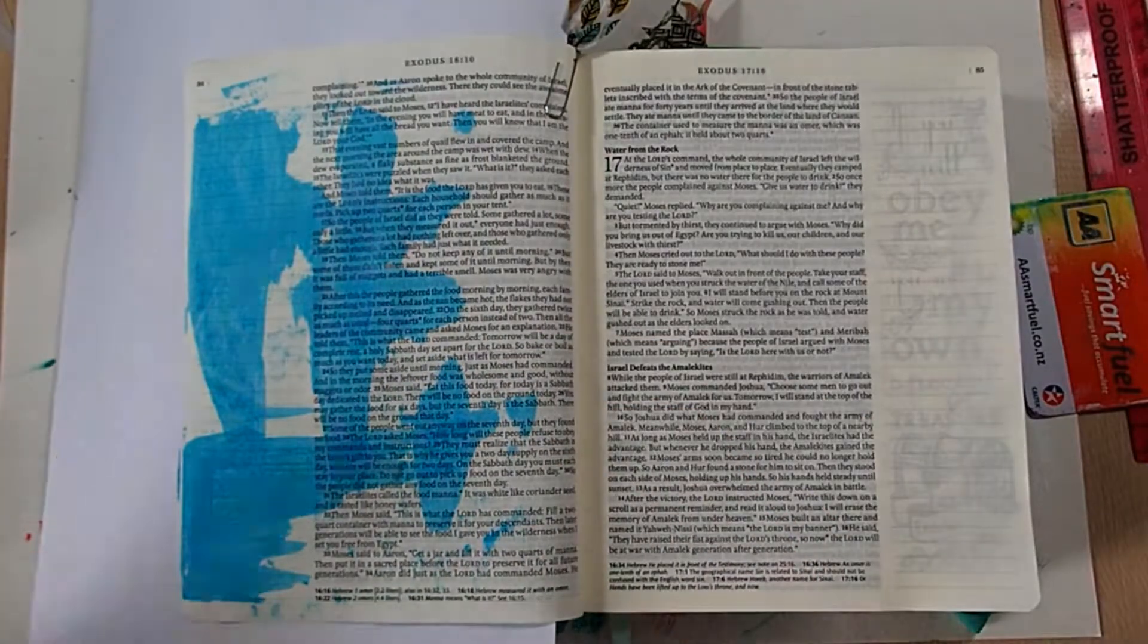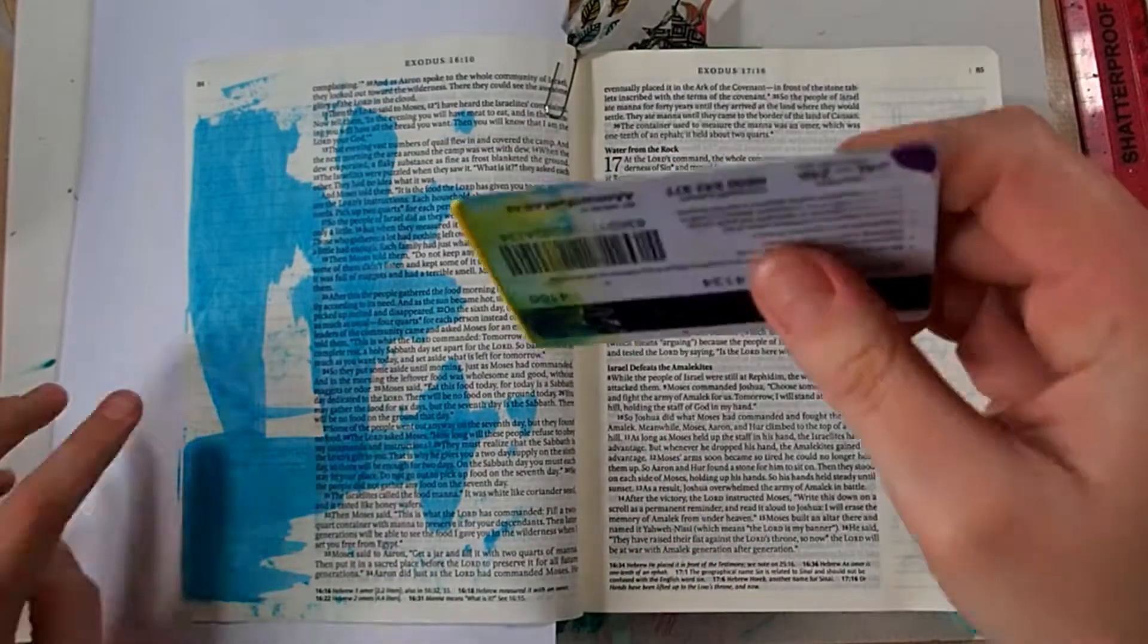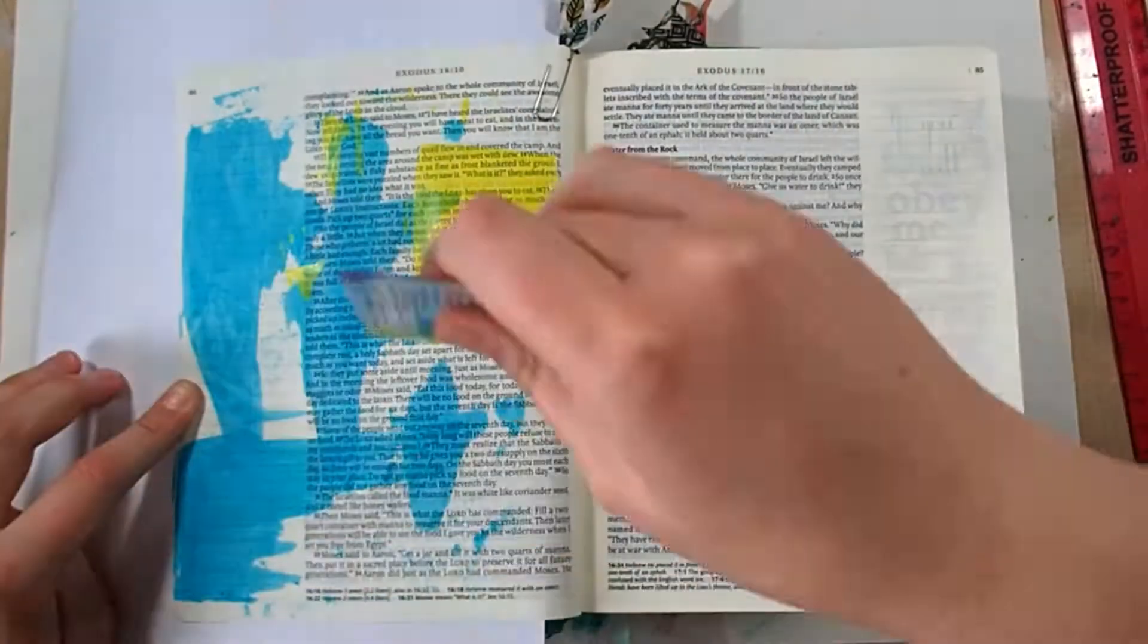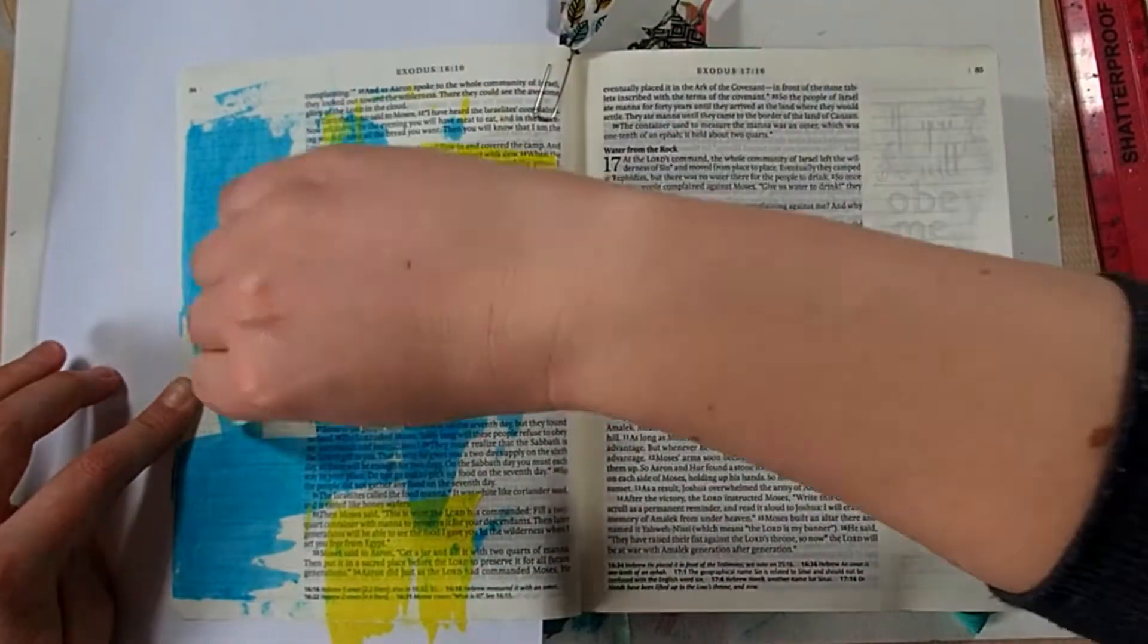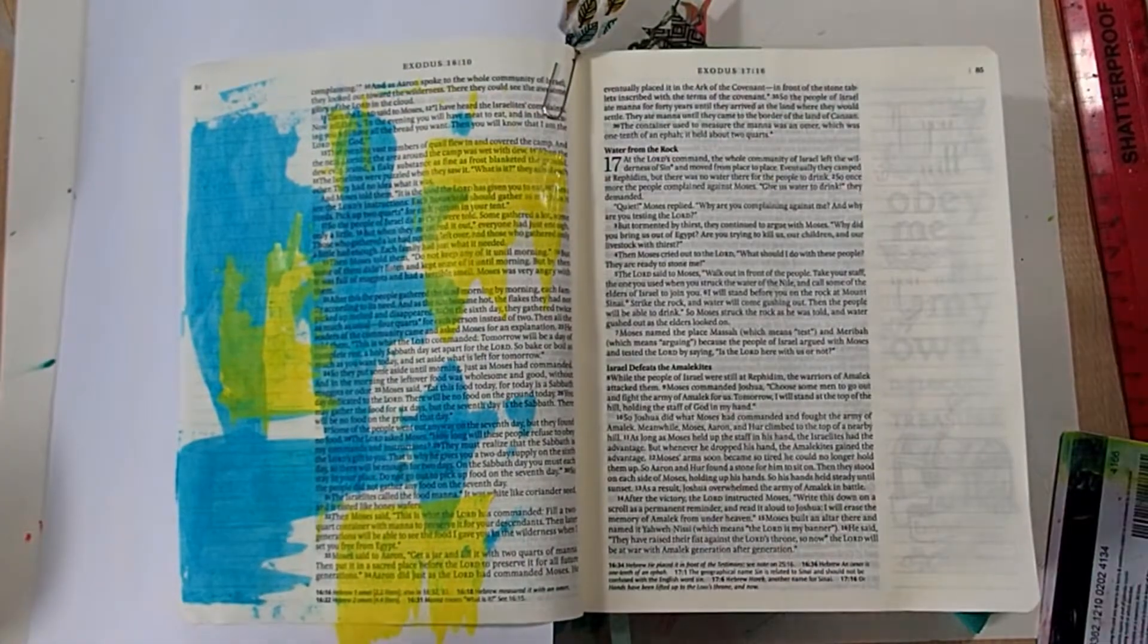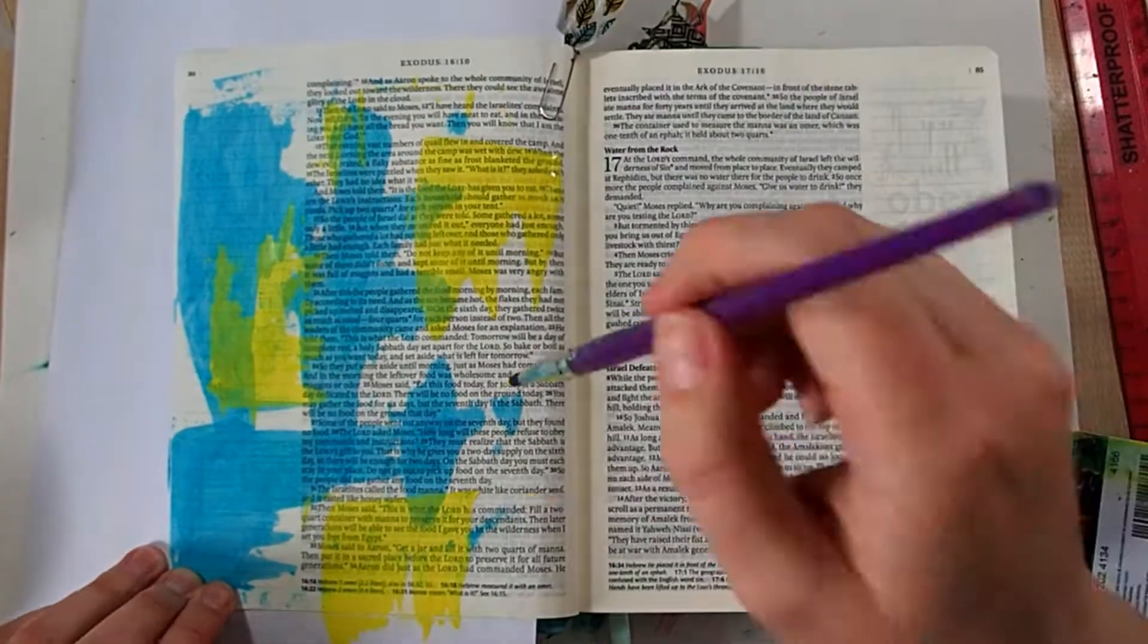So basically what I'm doing now is just putting on some paint on my pages. I just want to make it a little bit more interesting, but I still want some of the text to show through, because I need to still be able to read my Bible. So I'm applying it with a credit card, and I'm using dilution paints, because they're very translucent.